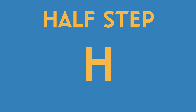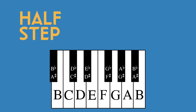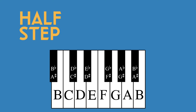The basic building block of Western music: the half step. On a keyboard, a half step is the distance between any adjacent keys. For example, if we start on F natural and go up a half step, we land on F sharp. If we start on A flat and go down a half step, we land on G natural.